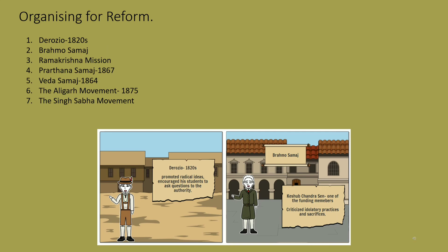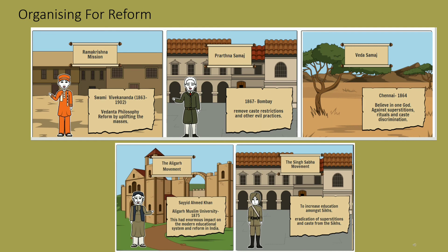Keshab Chandra Sen was one of the founding members of the Brahmo Samaj. The Ramakrishna Mission stressed the ideals of salvation through social service and selfless action — the main idea was to be selfless and help people in need for the nation. Swami Vivekananda was the man behind this and became very popular after his speech in Chicago, truly becoming a symbol of a new spirit and strength. The Prarthana Samaj was established in 1867 in Bombay to remove caste restrictions, child marriage, and encourage education for women and widow remarriage. The Veda Samaj, established in Chennai in 1864, was inspired by the Brahmo Samaj and aimed to condemn superstitions and rituals of orthodox Hinduism.